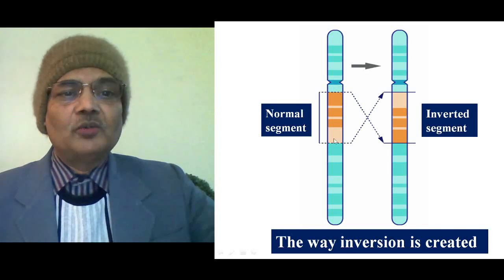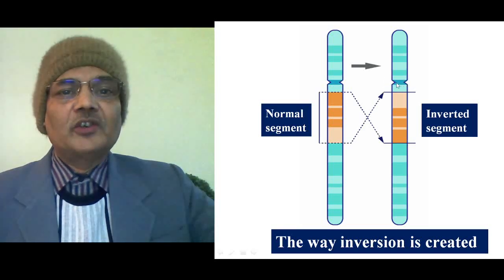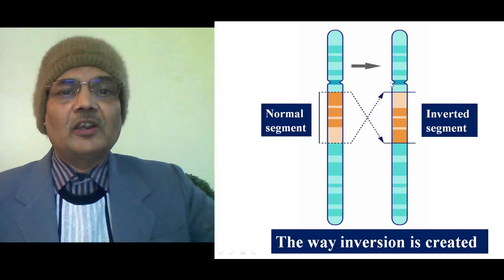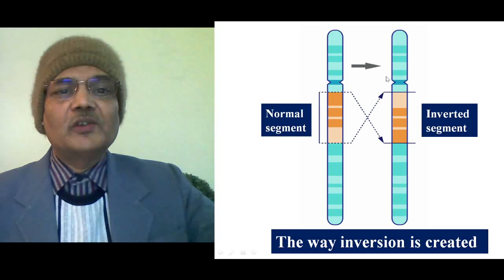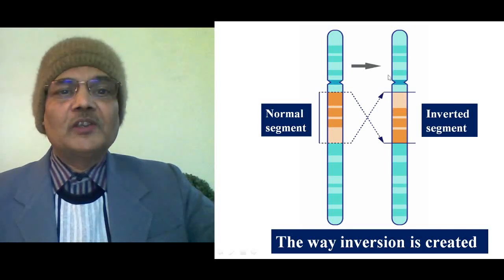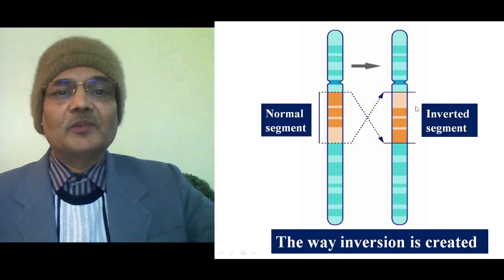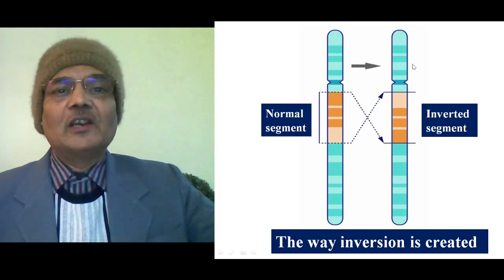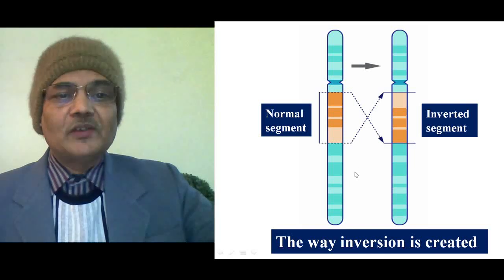In this particular case, the inverted segment does not include the centromere — this primary constriction is the centromere and it is not included in the inverted segment. This type of inversion in which the centromere is not located in the inverted area is called paracentric inversion. In contrast, pericentric inversion is that type in which the broken segment includes the centromere, with one break on each side of the centromere.